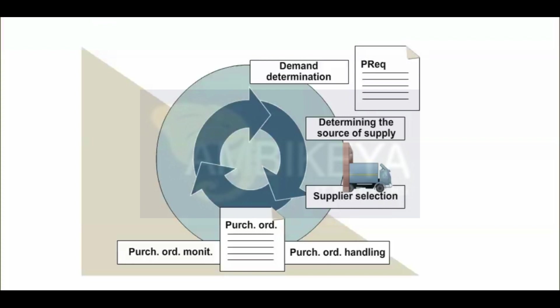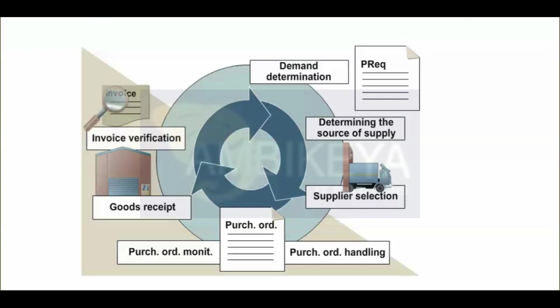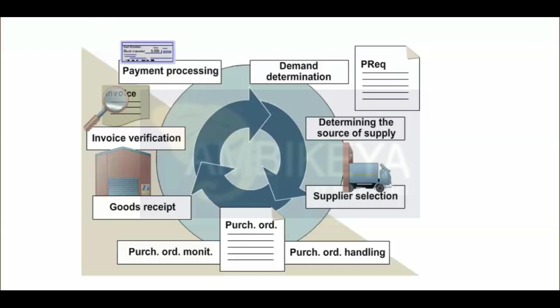Goods receipt: the system checks the amount of goods received against the purchase order quantity. Invoice verification: the vendor invoices are checked to see if the accounting and the content are correct. Payment processing: the vendor payment is usually done in financial accounting.